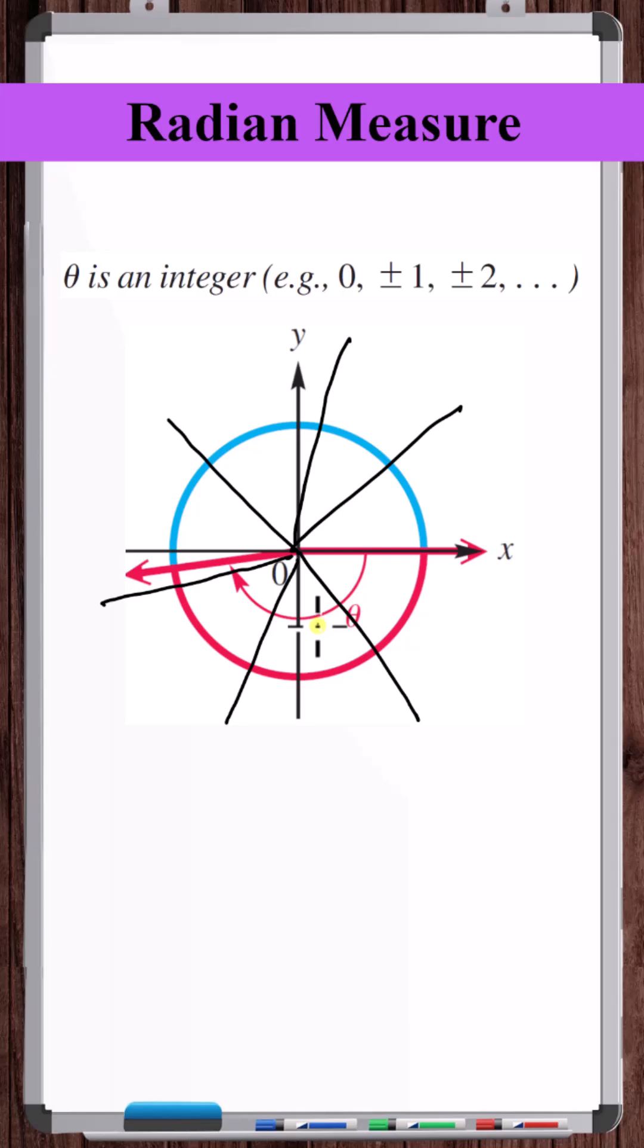So we can see if theta is an integer value, it's too far from theta equals negative two or theta equals negative four. So theta must equal negative three.